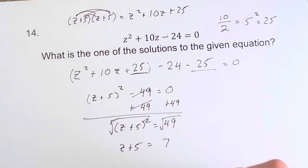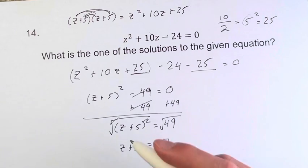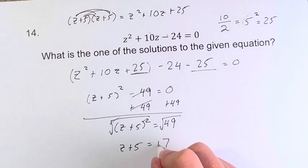We don't know whether z plus 5 is positive or negative, right? And what that means is that we have to turn this into positive or negative 7.